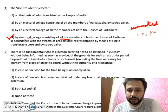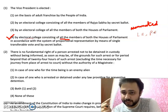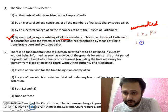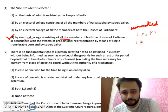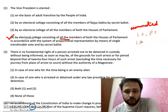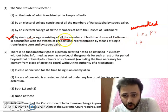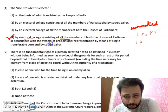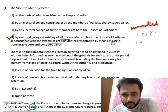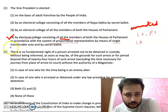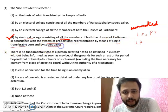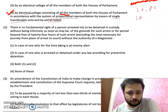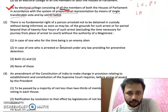But in the election of the President, we also require elected members of legislative assemblies including Delhi and Pondicherry. So here it is: electoral college consisting of all the members of both the houses of Parliament in accordance with the system of proportional representation by means of single transferable vote and by secret ballot. That was MCQ number 1.